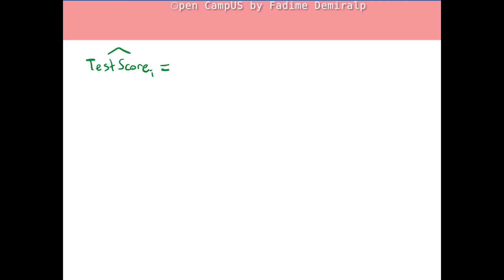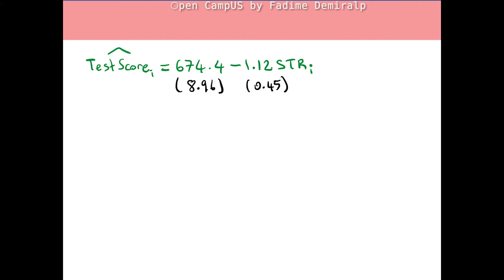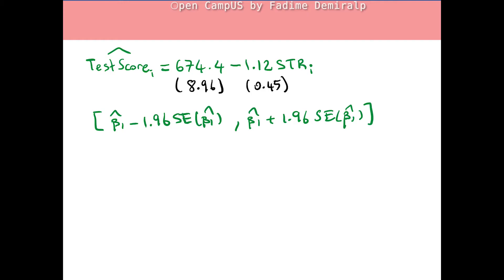Let's construct a 95% confidence interval for the slope coefficient in our example and interpret the interval. The estimated OLS regression was: the predicted value of test scores for the ith district equals 674.4 minus 1.12 times the student-teacher ratio. The standard error of beta 0 hat was 8.96 and the standard error of beta 1 hat was 0.45. Recalling the 95% confidence interval for the slope coefficient beta 1: in our example, beta 1 hat is negative 1.12 and the standard error of beta 1 hat is 0.45.